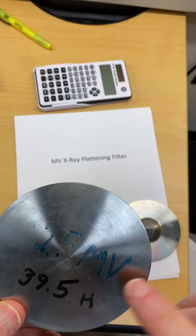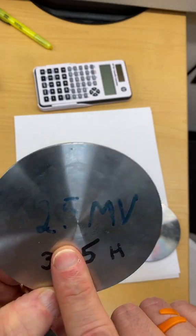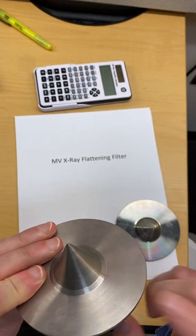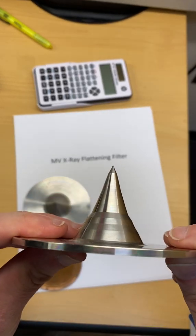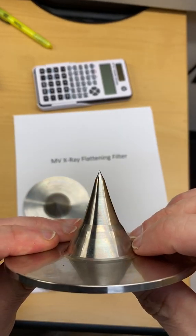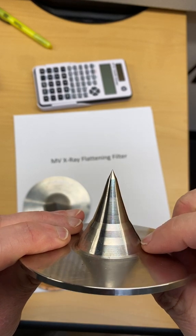These two are slightly different. This one says 2.5 MV on it. I think this came out of an old Linac. I think this one came out of a newer one. And you can see they're specifically designed. They have a very special shape on them.